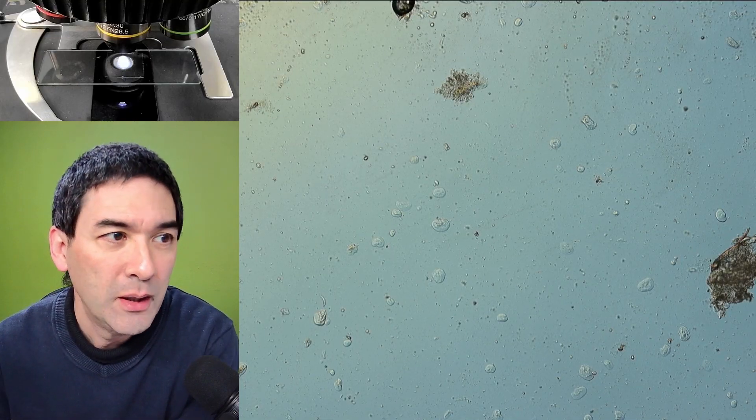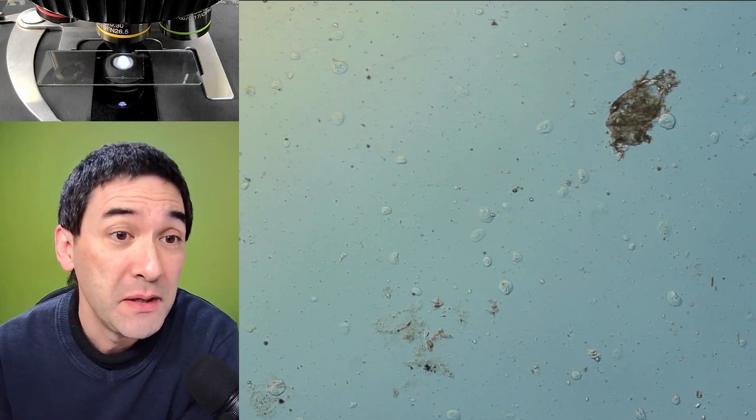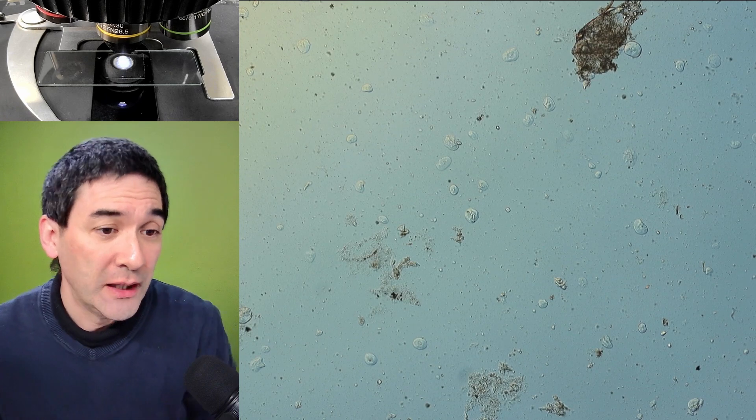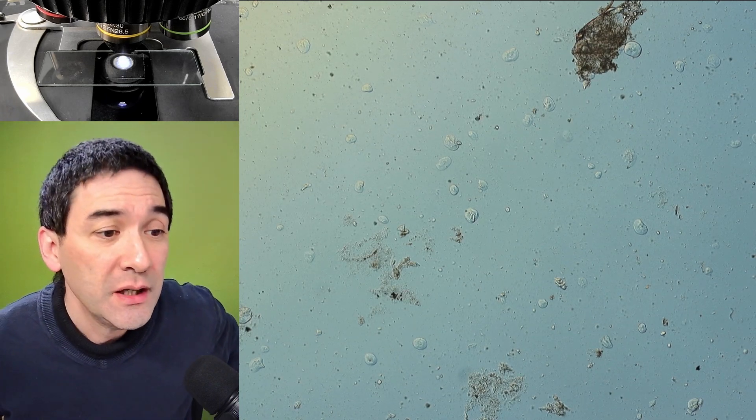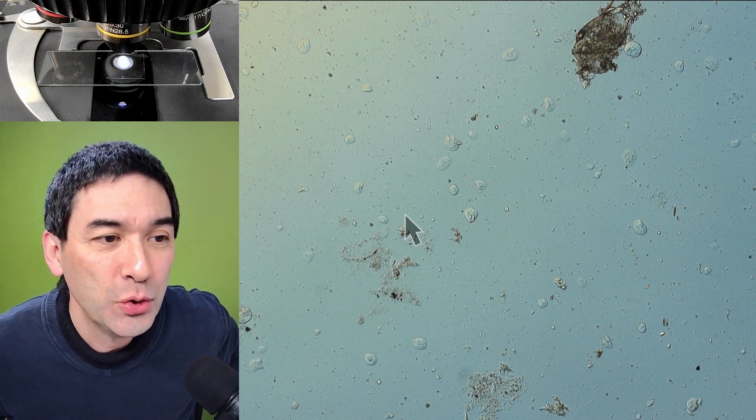Here I'm at fairly low magnification, using only my 10x objective, and that's basically what we see. Those round things you see here are essentially starch grains, so nothing unusual. Let me get the arrow here.